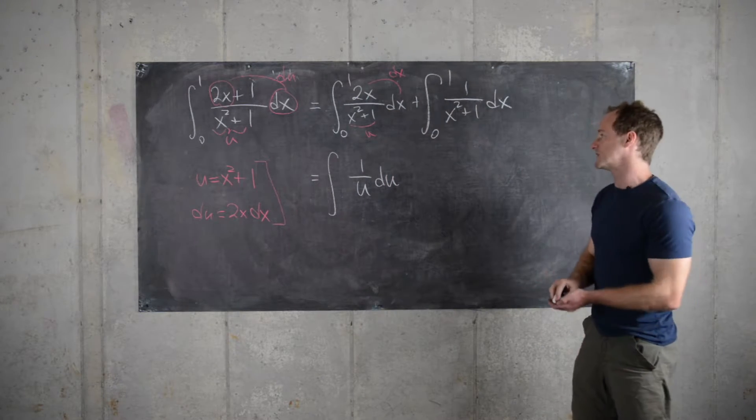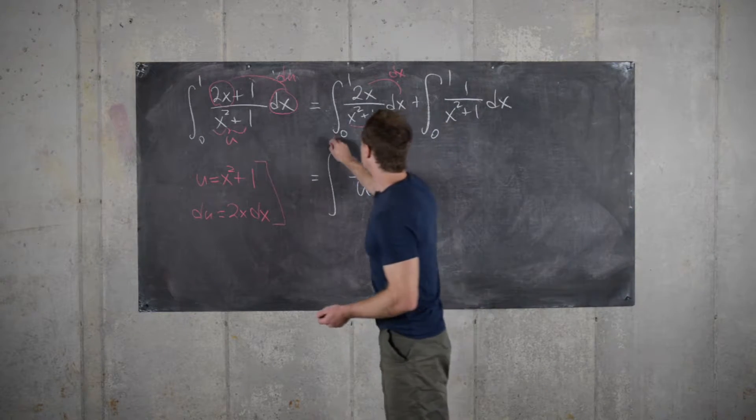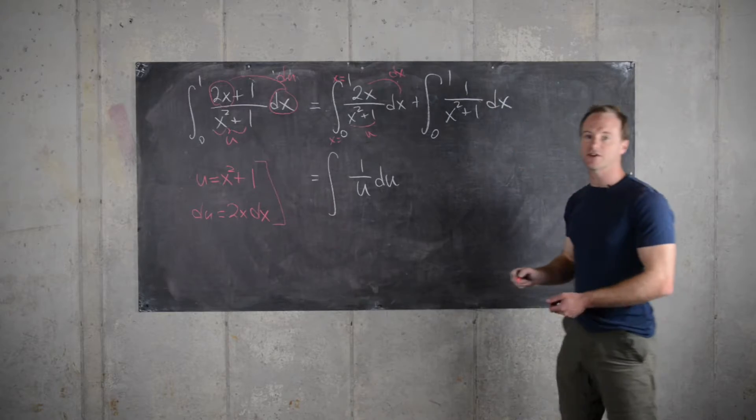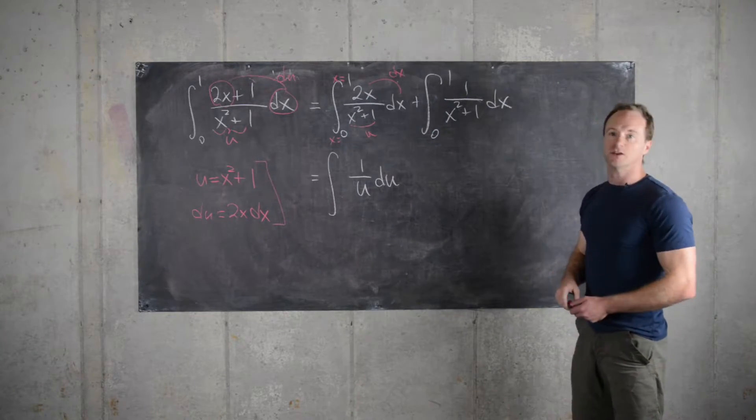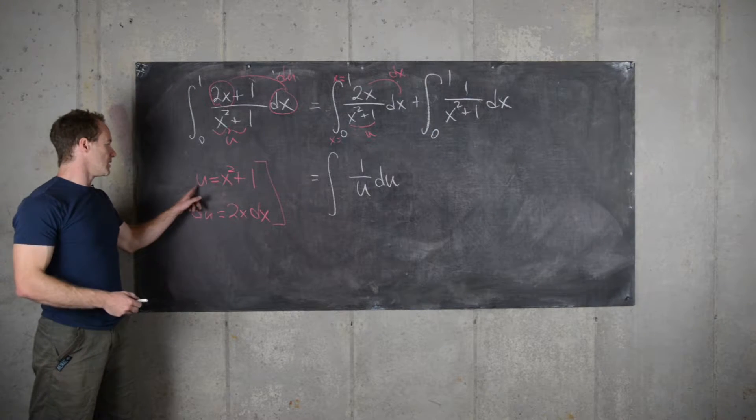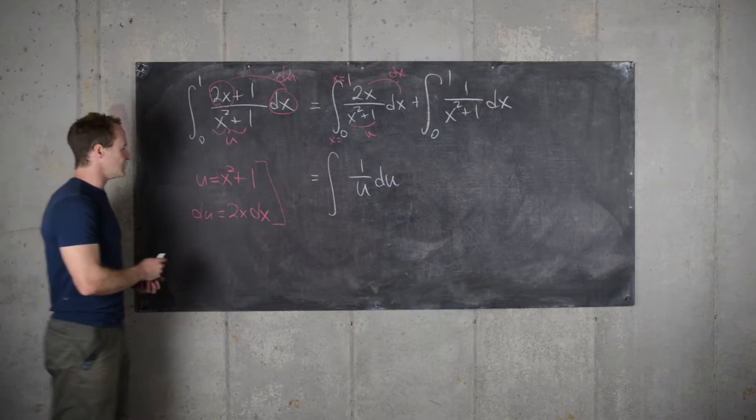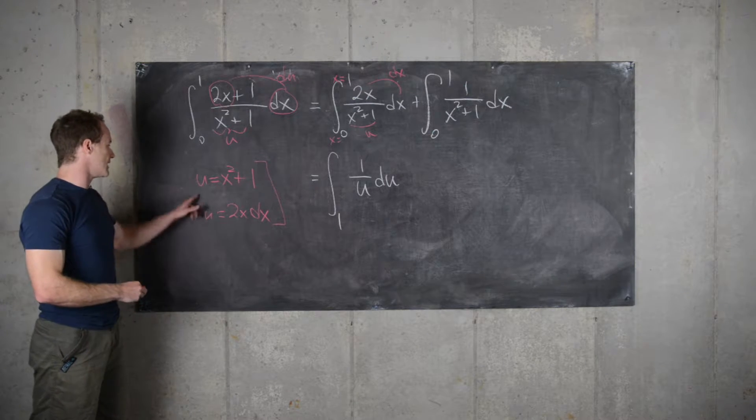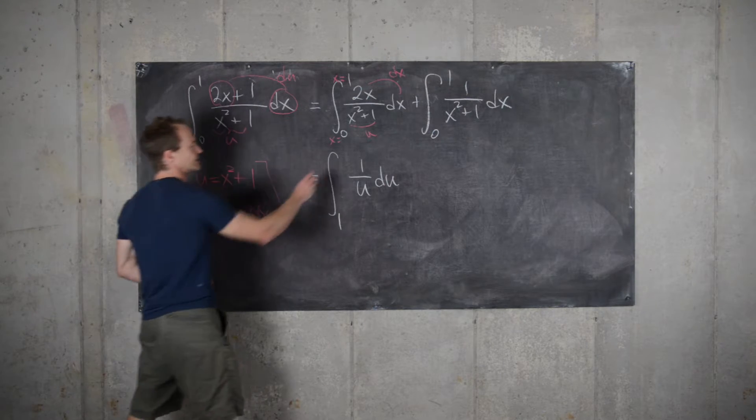And now let's see what happens to the bounds of integration because as we've seen, these are x numbers, but we need to translate those into u numbers. So we can go over here to our substitution and see what happens. If x equals 0, u is 0 plus 1, so u is 1. And then if x equals 1, u is 1 plus 1, so u is 2.